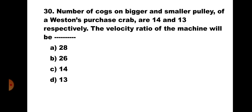Question number 30: Number of cogs on the bigger and smaller pulley of a Western's purchase crab are 14 and 13 respectively. The VR of the machine will be: A) 28, B) 26, C) 14, D) 13. For a Western's differential pulley block, VR = 2N1 / (N1 − N2), where N1 = 14, N2 = 13. VR = (2 × 14) / (14 − 13) = 28. The correct answer is A) 28.